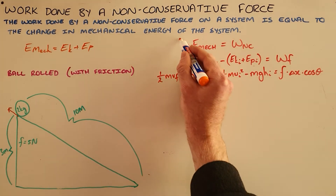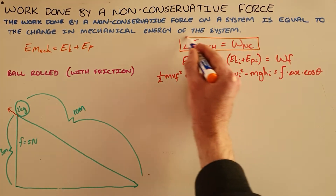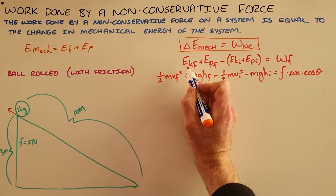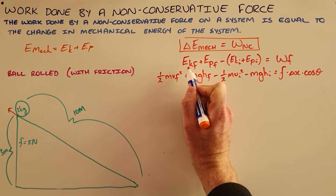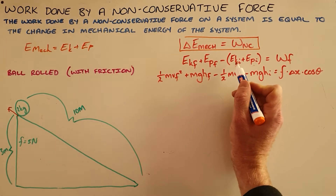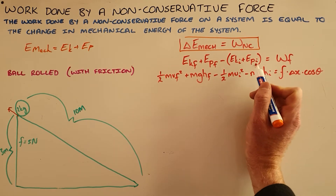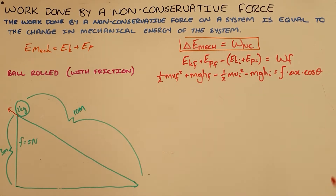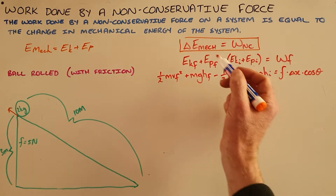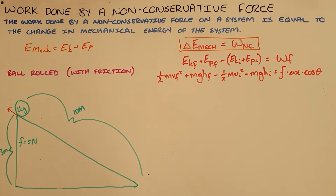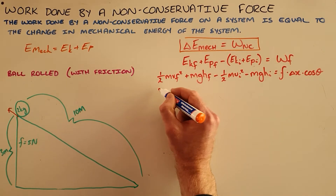We start with the formula: the change in mechanical energy is equal to the work done by the non-conservative force. This can be rewritten as the final kinetic energy plus the final potential energy minus the initial kinetic and potential energies, equal to the work done by friction, since that is the only non-conservative force. We then substitute in the formulae for each of these and the given values.